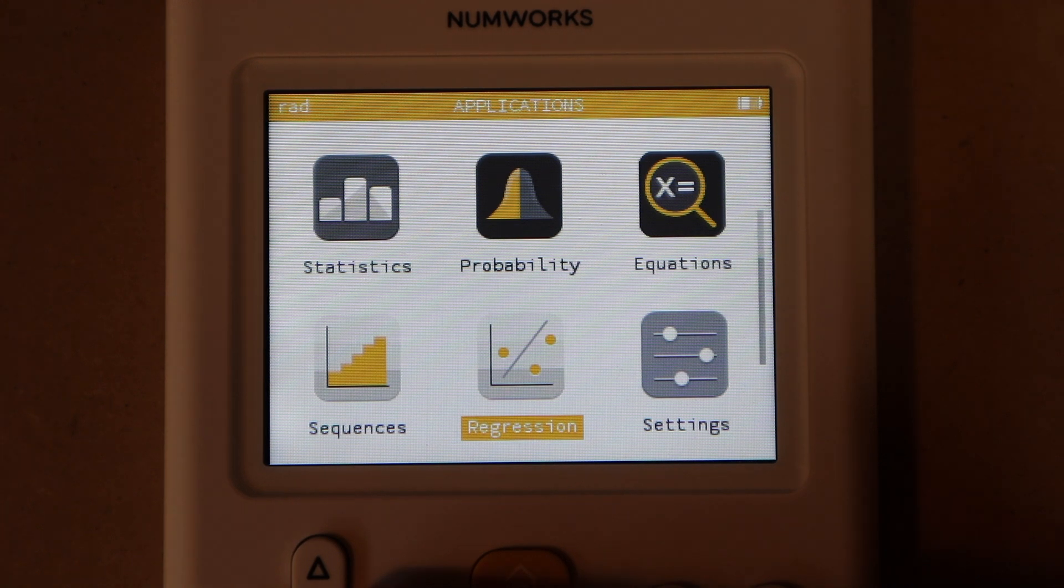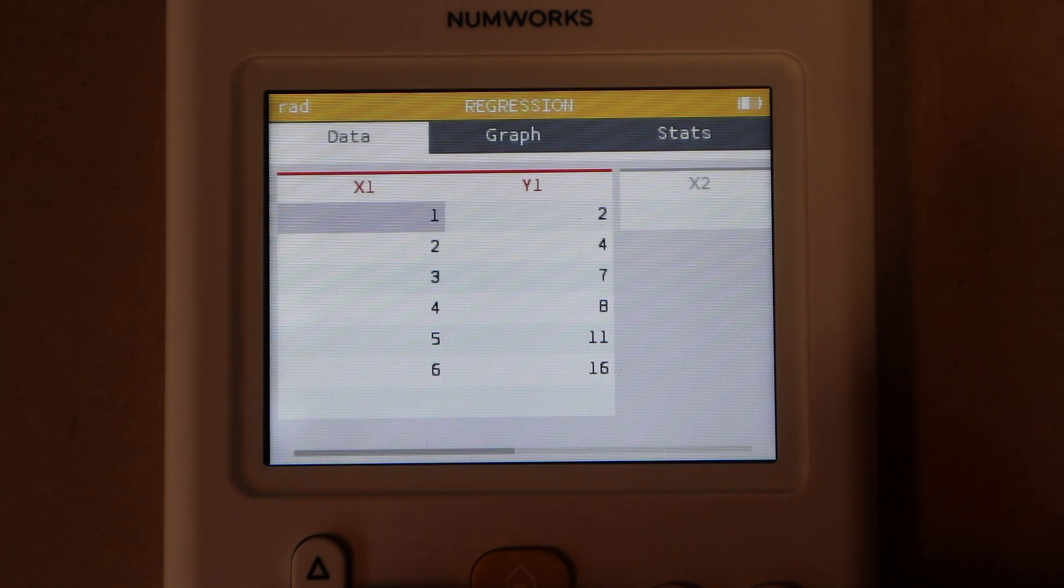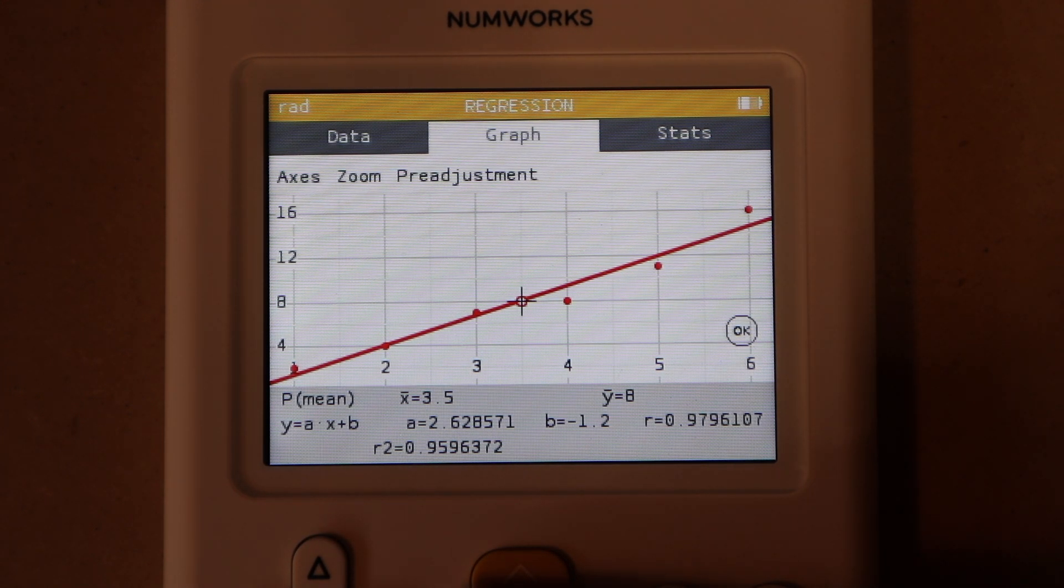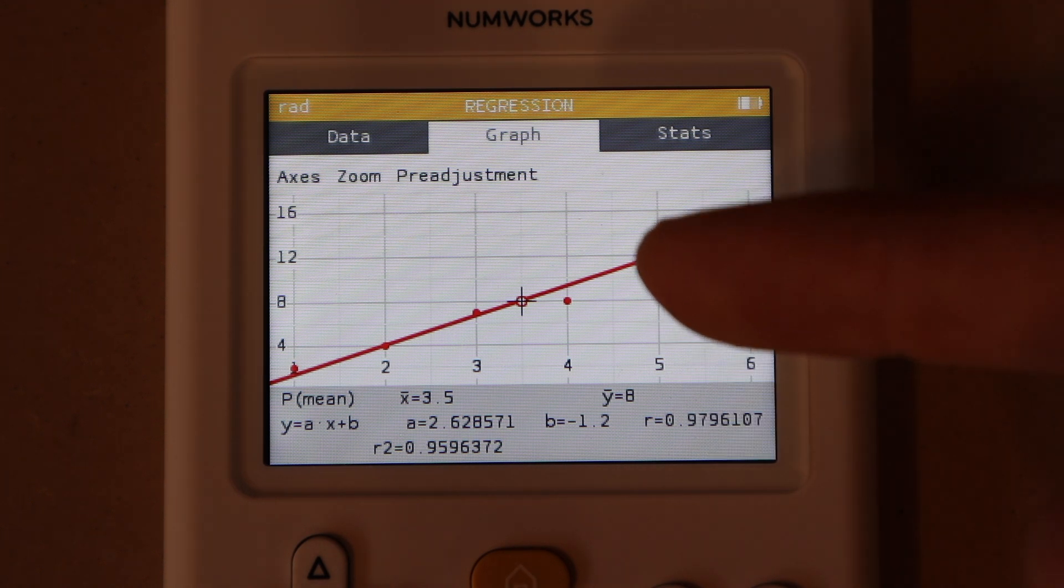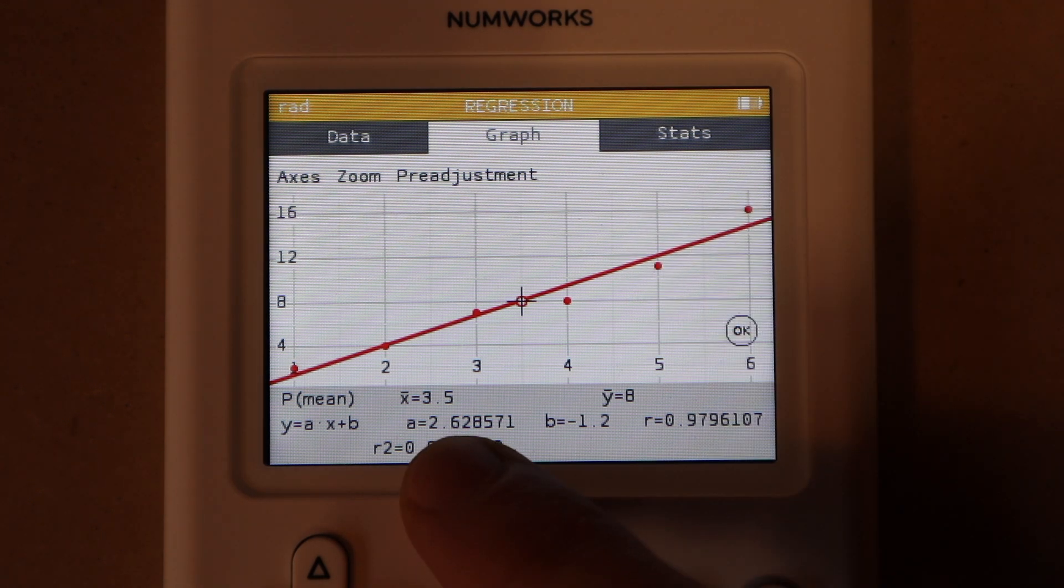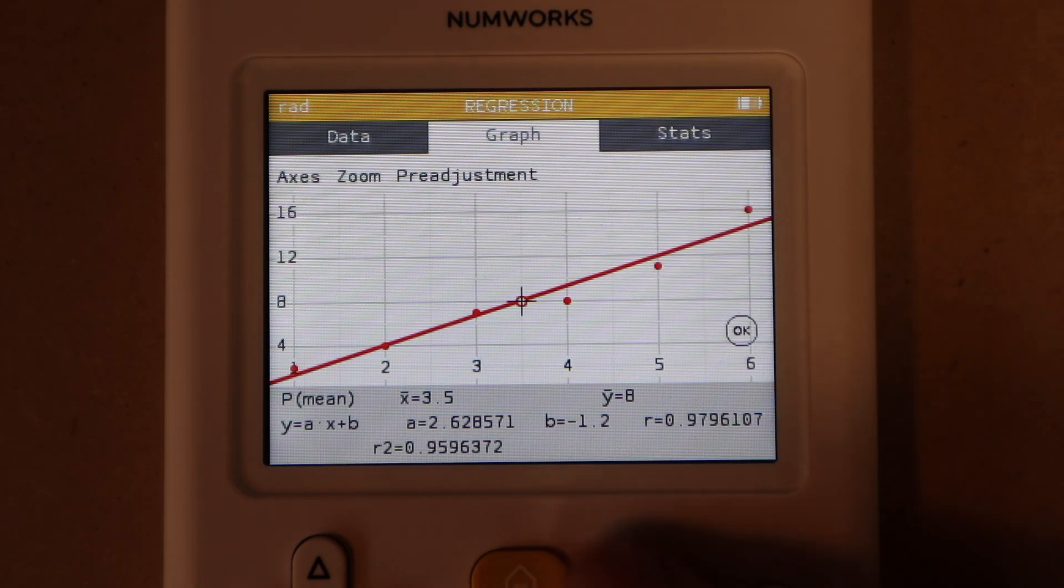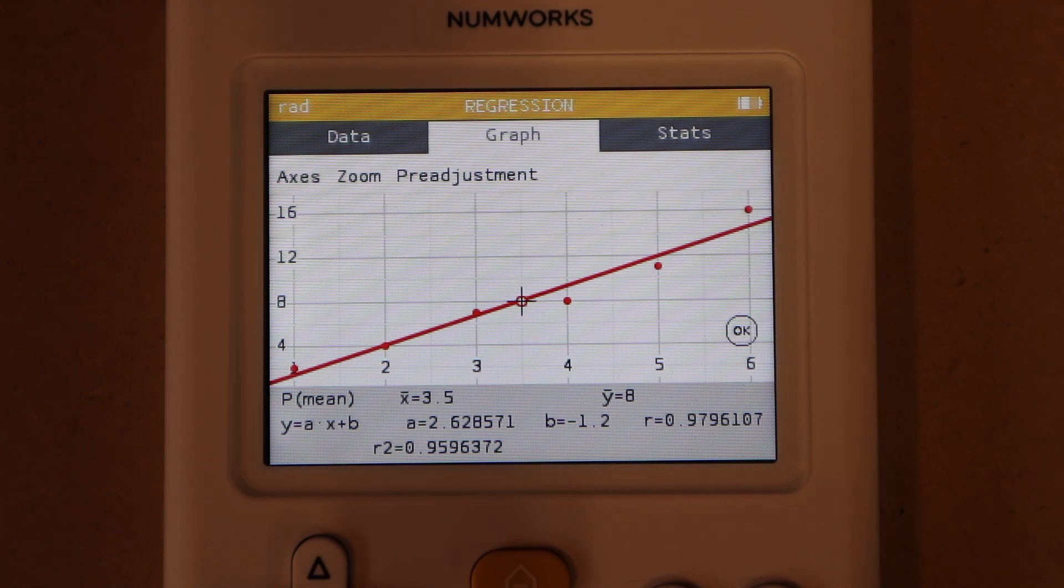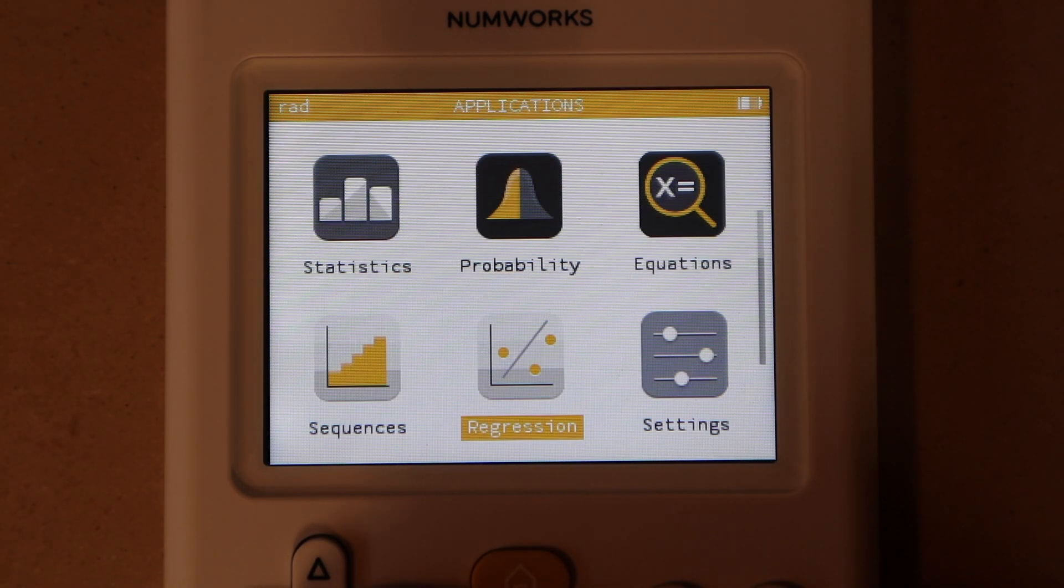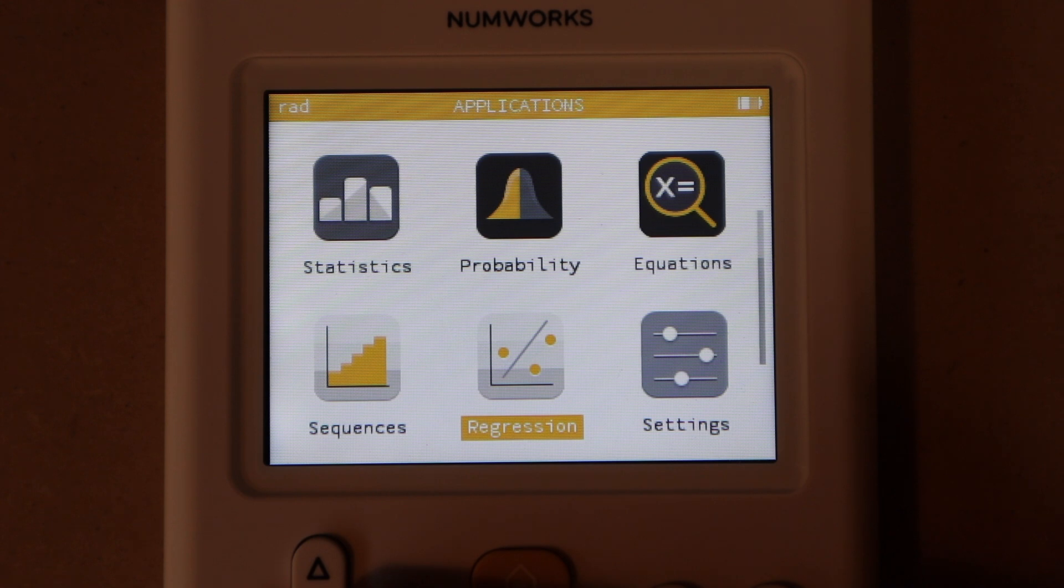This is an app for linear regression. Here I have already entered some x and y values just as an example, and then when you go over to graph here it will plot your points and then give you a line of best fit and your equation for that line of best fit. You also get your correlation coefficient, and that is it as far as a quick overview of all of the apps and functions that the NumWorks graphing calculator has.